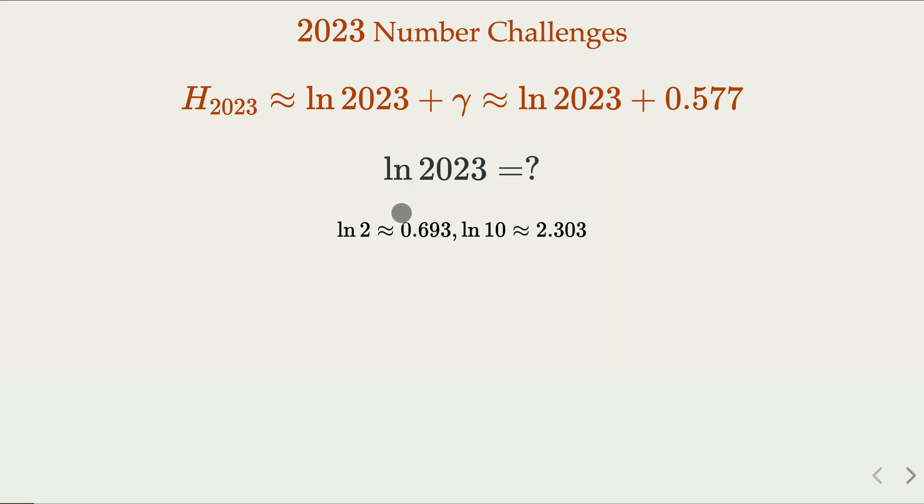With that, how to evaluate 2023? First of all, you realize 2023 is somewhere close to 2048. 2048 is 2 to the eleventh power. By using the property of logarithm, we know that that is about eleven times log 2.